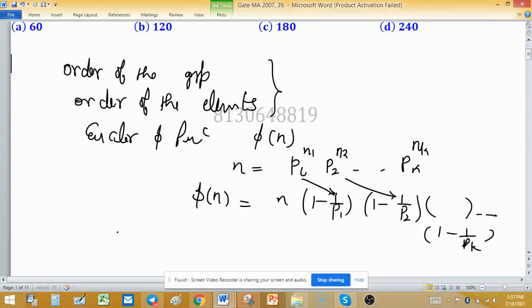And if n is prime, if n is prime, then value of φ(n) is equal to n - 1. There is no need to apply this formula; you can use this directly.